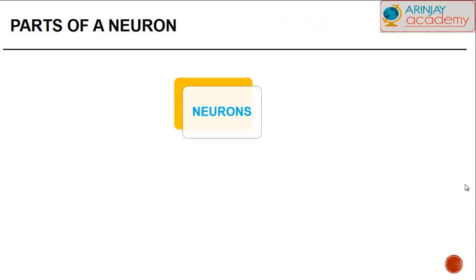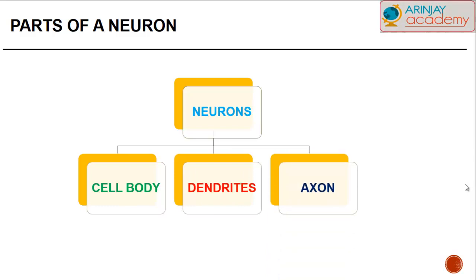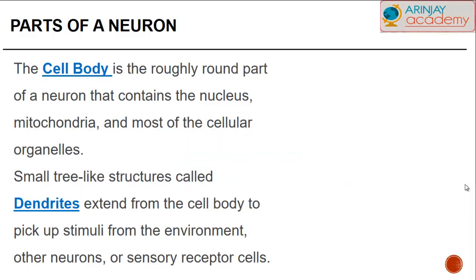Let's have a look at the parts of a neuron. A neuron is divided into three different parts: the cell body, the dendrites, and of course the axon. Each and every particular part has a specific function. The cell body is a roughly rounded part of the neuron which contains the nucleus, the mitochondria, and most of the cellular organelles. The cell body is more or less like the brain of the neuron.